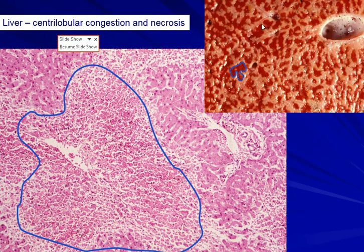Taking a closer look and comparing the gross appearance of this dark area with the microscopic appearance, you can see that it corresponds to marked congestion around the central vein. Sometimes the blood may actually extravasate out of the sinusoids and compress the liver parenchyma, leading to atrophy and necrosis of the liver cells in these areas, resulting in centrilobular congestion and necrosis around the central vein.